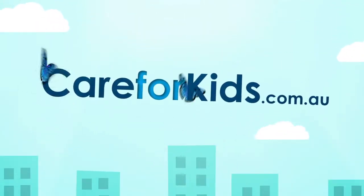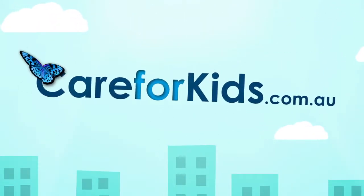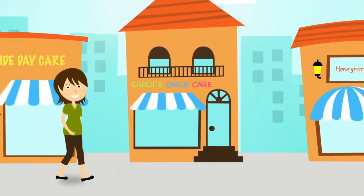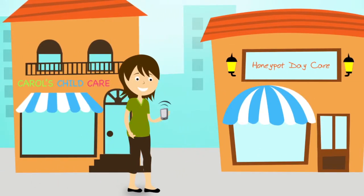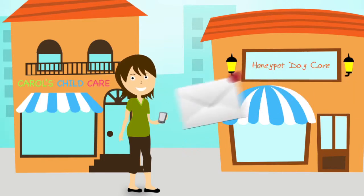Care for Kids Child Care Vacancy Alert Pro, or VA Pro, takes the guesswork out of finding childcare and puts the power in your hands by delivering the crucial info straight to your inbox.